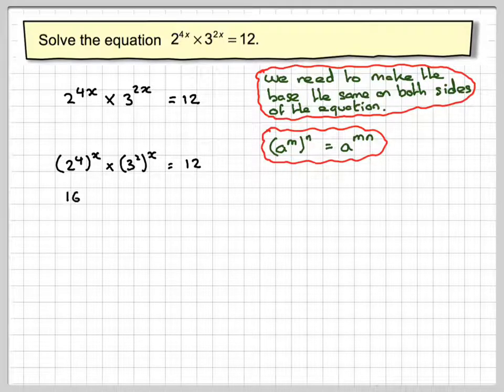So then we're going to have 2 to the 4, which is 16 to the x, times 3 squared, which is 9 to the x, which is equal to 12.